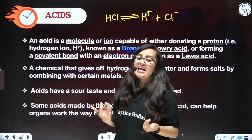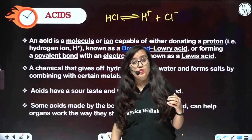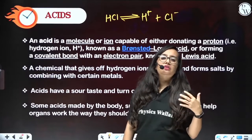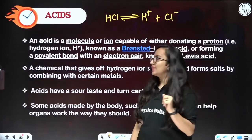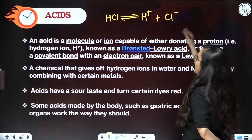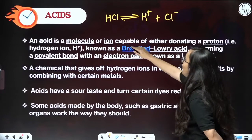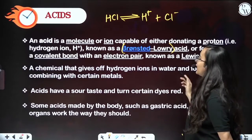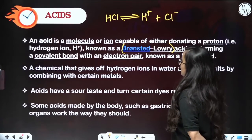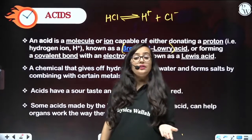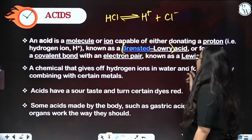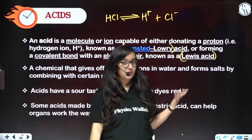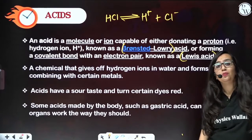If it is donating H plus very easily, if it is donating protons easily, then it is a weak acid. This concept was given by scientists Bronsted and Lowry. There is also the concept of forming a covalent bond with an electron pair, known as Lewis acid — one who can accept an electron pair. That is also an acid according to Lewis. So there were two theories: one was given by Bronsted-Lowry and one was given by Lewis.